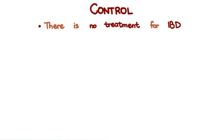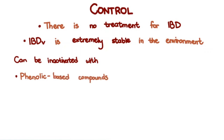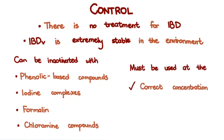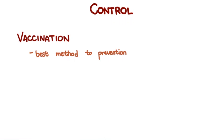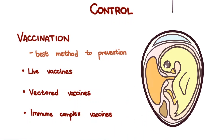Control. There is no treatment for Infectious Bursal disease. Being a non-enveloped virus, it is extremely stable in the environment. It can be inactivated with phenolic-based compounds, iodine complexes, formalin, and chloramine compounds, but these must be used at the correct concentration with sufficient contact time. Vaccination is the best method of prevention. Many vaccines against IBD are available, such as live vaccines, vectored vaccines, and immune-complex vaccines, some of which can be administered in ovo, or while the chick is still in the egg.